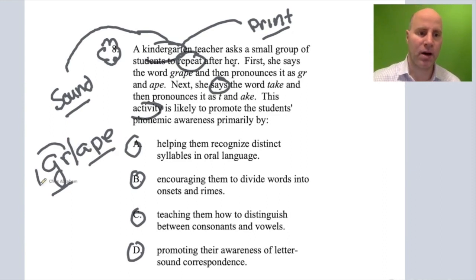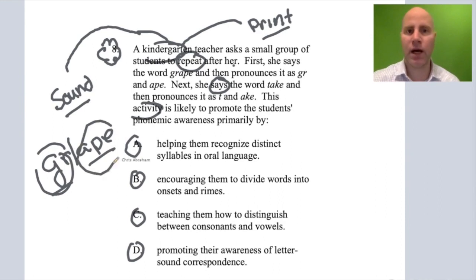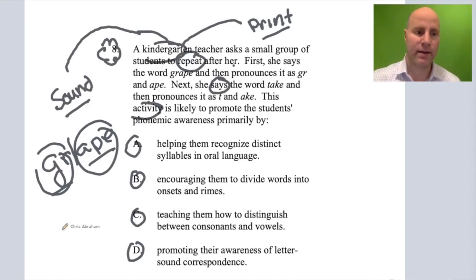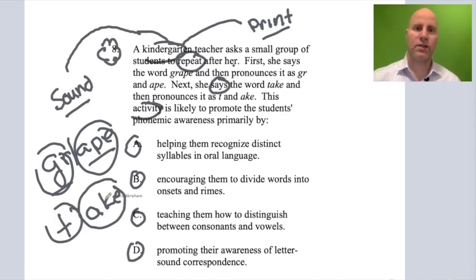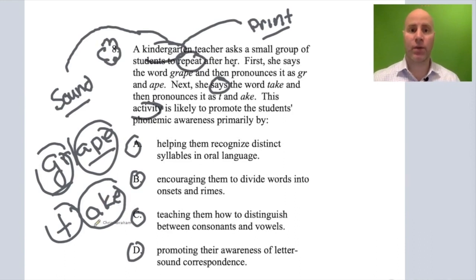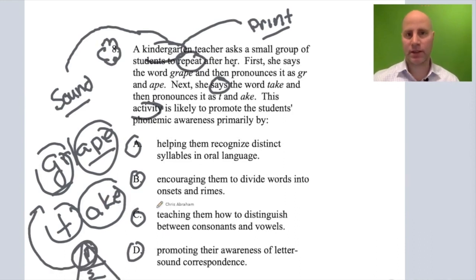We call that onset and rhyme, and the teacher is orally doing it with the words grape and take. This is involving onset and rhyme — isolating sounds in a word — and it falls under phonemic awareness. Now let's look at our answer choices.